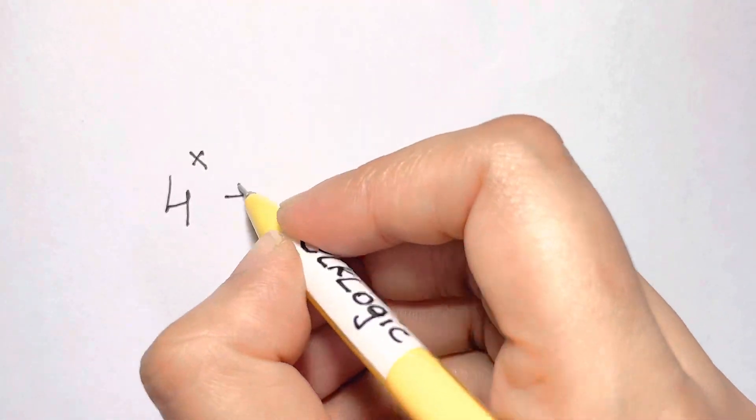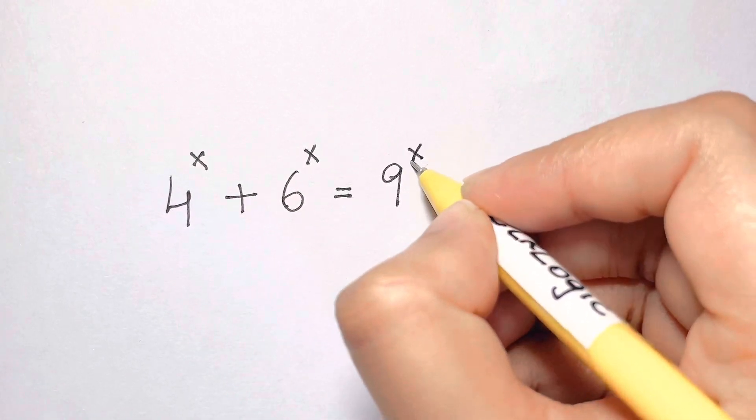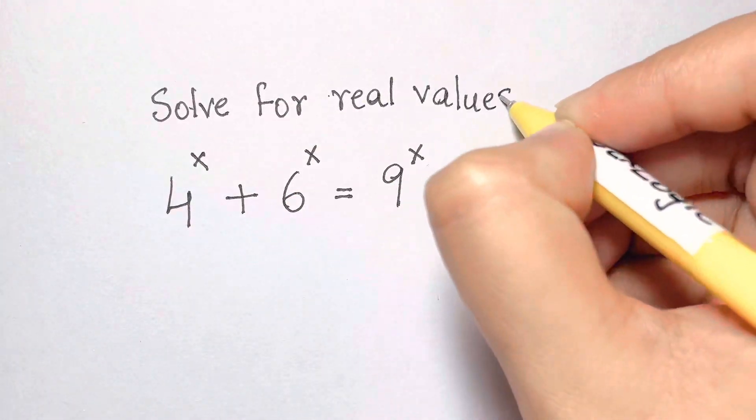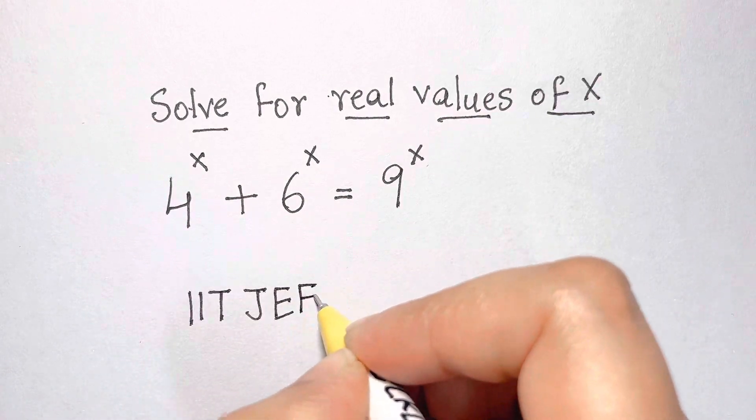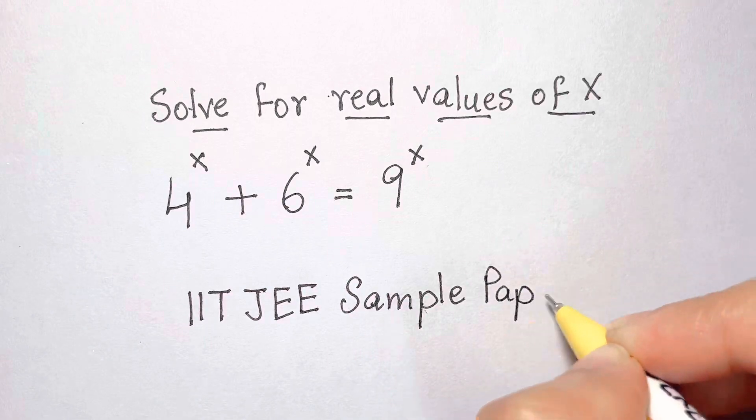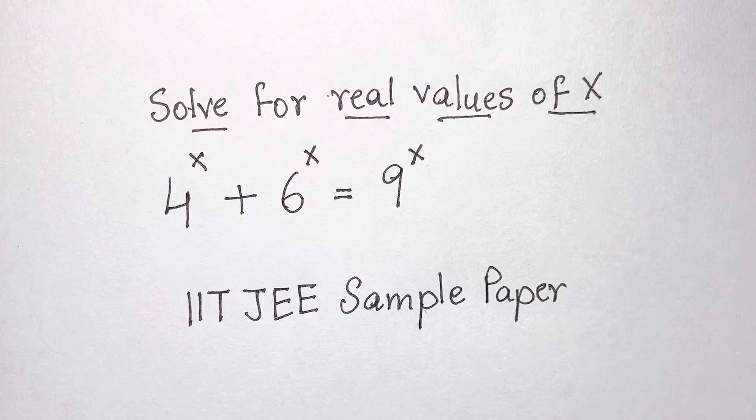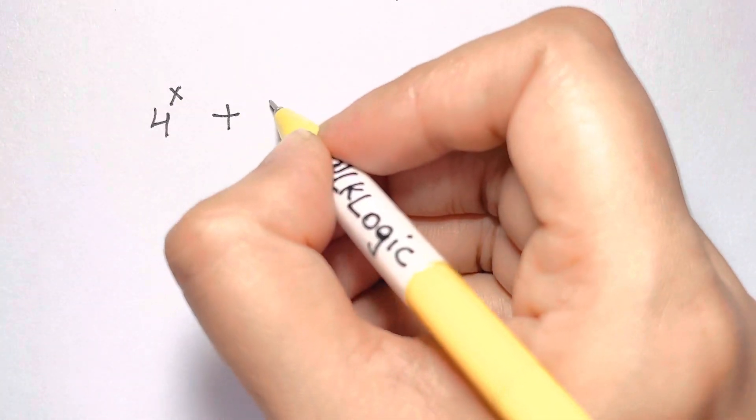4 to the power of x plus 6 to the power of x equals 9 to the power of x. Solve for real values of x which satisfies this equation. It came from IIT JEE sample paper, but I have also seen it shared on the internet with the catchphrase 'you should be able to solve this.' Pause this video if you want to give this problem a try, and when you're ready keep watching to learn how to solve this problem.